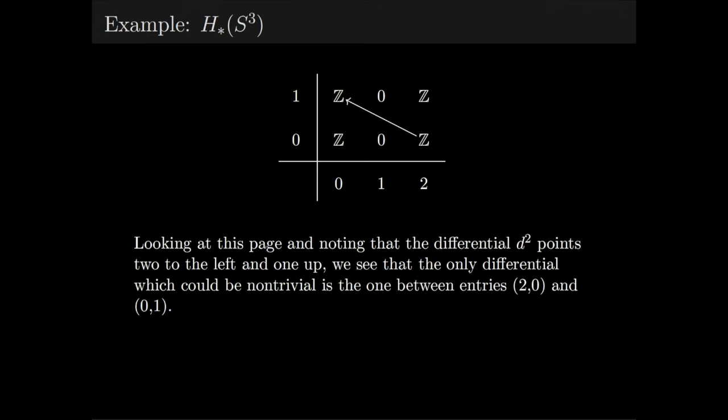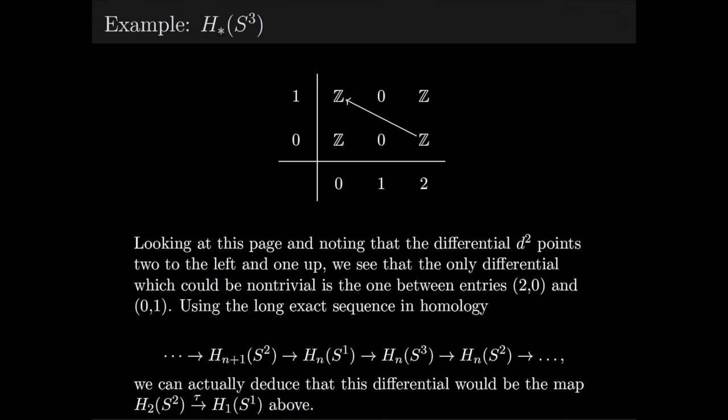Looking at this page, we can see that the only differential that can possibly be non-trivial is the one between entries. Now, formally, there's nothing telling us how this differential behaves unless we want to actually write out the long exact sequence in homology from the snake lemma, compute that boundary map, and then understand how it behaves after taking homology twice.